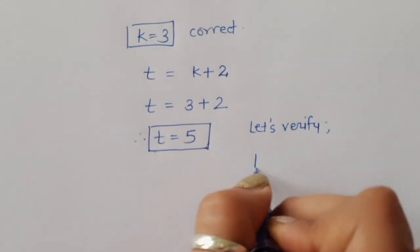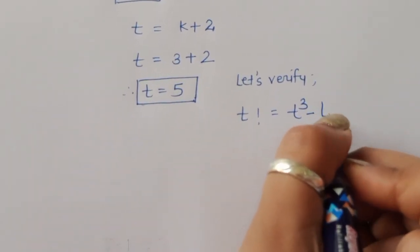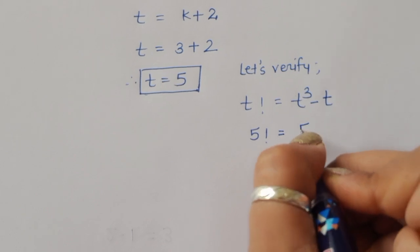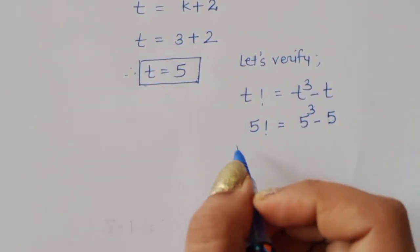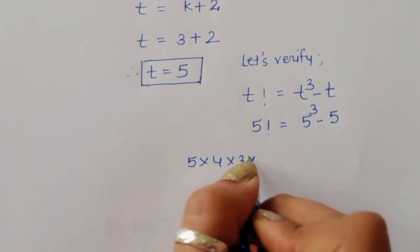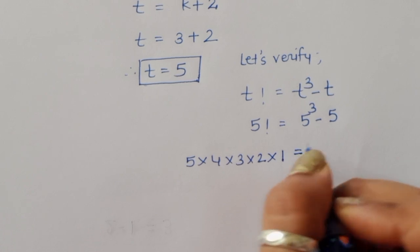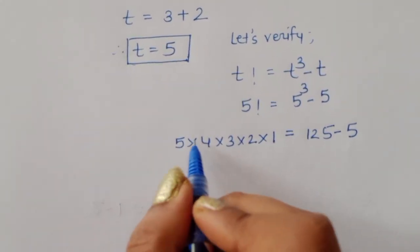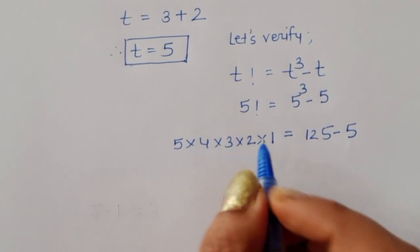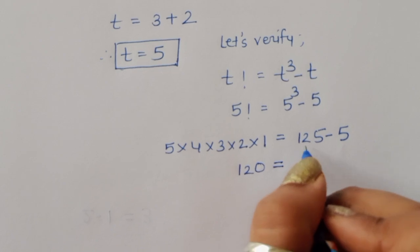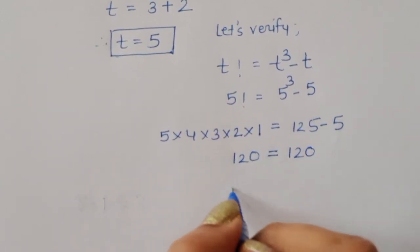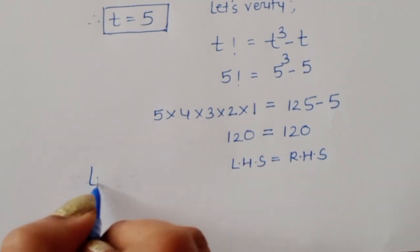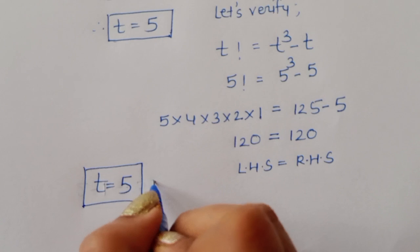Let's verify. According to the question, factorial of t equals t cubed minus t. Substituting t equals 5: factorial of 5 equals 5 cubed minus 5. Factorial of 5 is 5 times 4 times 3 times 2 times 1 equals 120, and 125 minus 5 equals 120. So LHS equals RHS, confirming that t equals 5 is the correct solution.